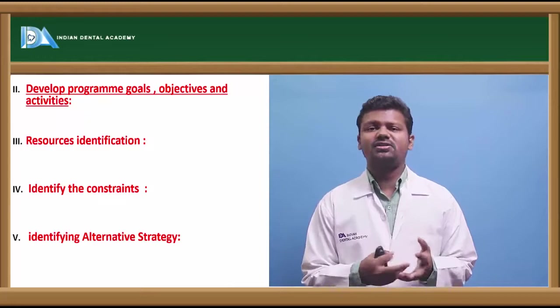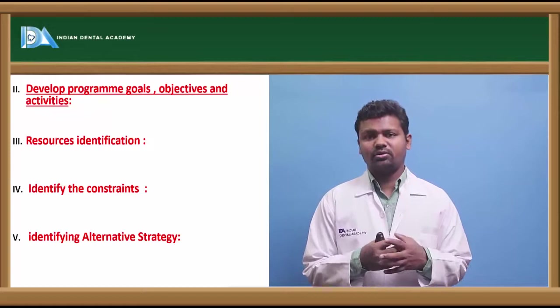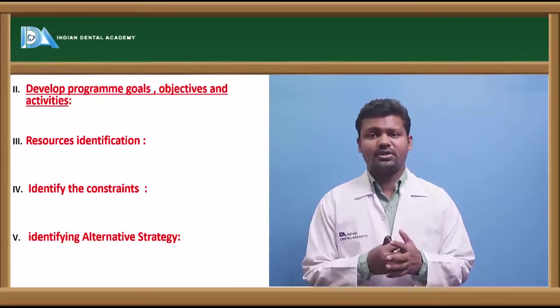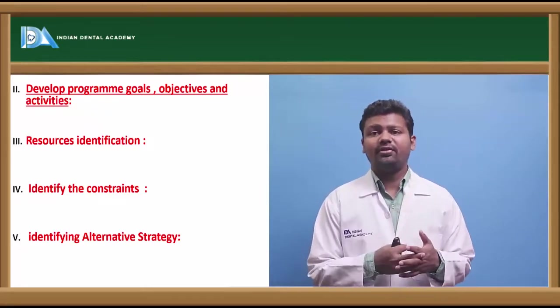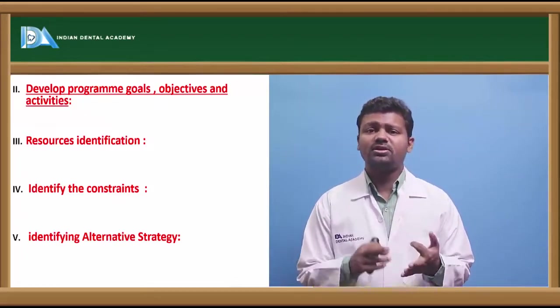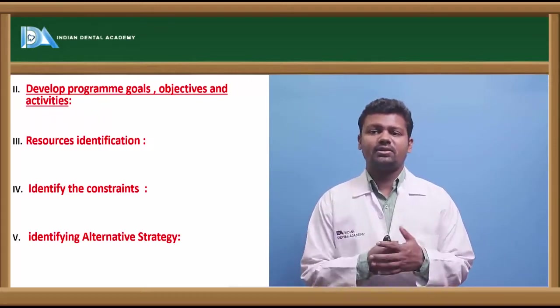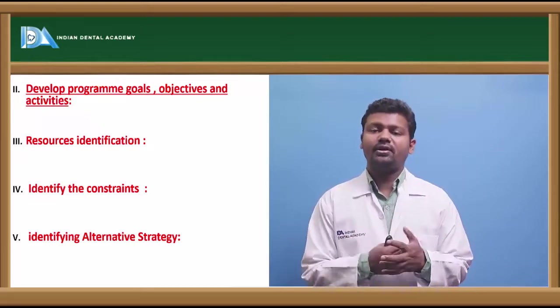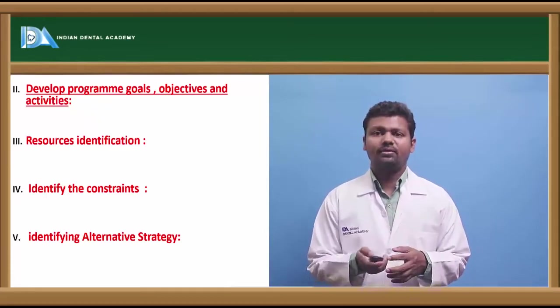Identifying the constraints. Constraints in simple words are the people who are of restriction or making the flow of a plan or the flow of the program they are obstructing. Then there is alternative strategy. Once the programs, now identifying the constraint, the constraints can be due to the political agencies or the political members, anti-social elements which don't want the program to run nicely. These are the constraints. Identifying the alternative strategy when the constraints has been identified we can develop an alternative strategy so that we can overcome those planning processes.